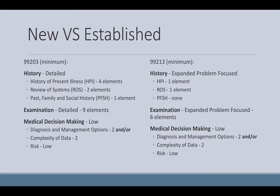If you look at 99203s, at the very minimum to qualify for these levels, for your history you have to do a detailed history, which includes four elements of the history of present illness, two elements of review of systems, and one element of past, family, and social history. Your examination needs to include at least nine elements, and your medical decision-making is low. For 99213s, you'll see that the medical decision-making requirements are exactly the same as a 99203, but your history doesn't have to be as high and your examination elements don't have to be as high. For history, you're required to have an expanded problem-focused history, which includes an HPI of one element, a review of systems of one element, and no requirement for past, family, and social history. Your minimum examination needs to be at least six elements — six to eight elements puts you in an expanded problem-focused examination.